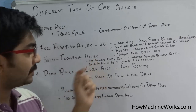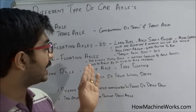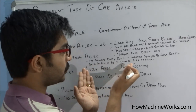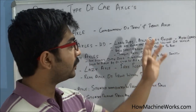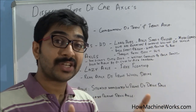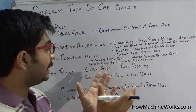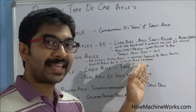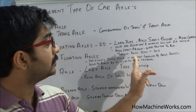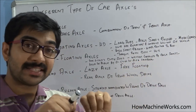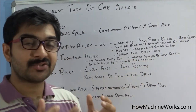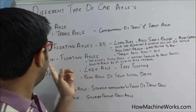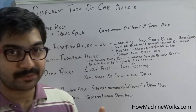Next we have the semi floating axle, used in light duty vehicles and cars. It has a light duty differential and the weight of the vehicle is carried by the axle shaft itself. It is held in place by a c-clip in the differential carrier. If the axle shaft breaks, there is a chance the wheel could roll off from the vehicle — that is a danger with semi floating axle types.